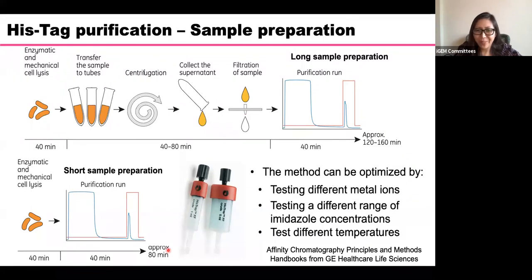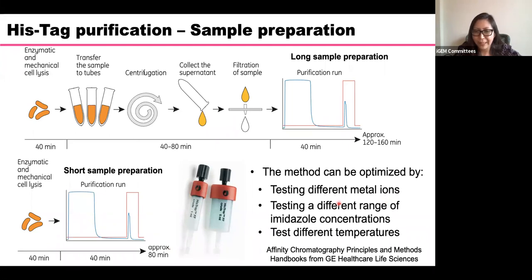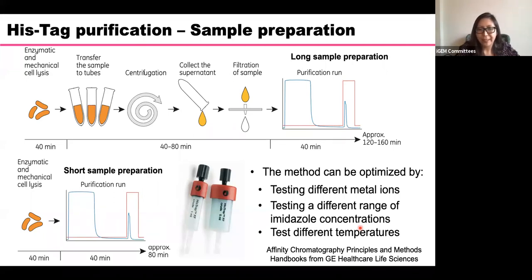To optimize the His-tag purification method, you can test different metal ions such as copper or nickel. You can also vary the imidazole concentration and try different temperatures, since some proteins are temperature sensitive and require working in a cold room, while others can be purified at room temperature.